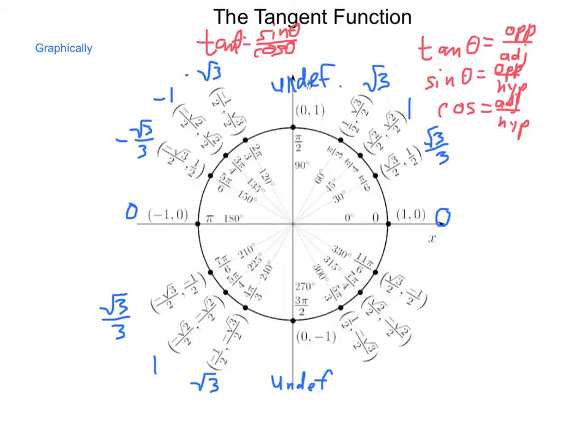Then, we'll have a negative radical 3, negative 1, negative radical 3 over 3, and back to 0.